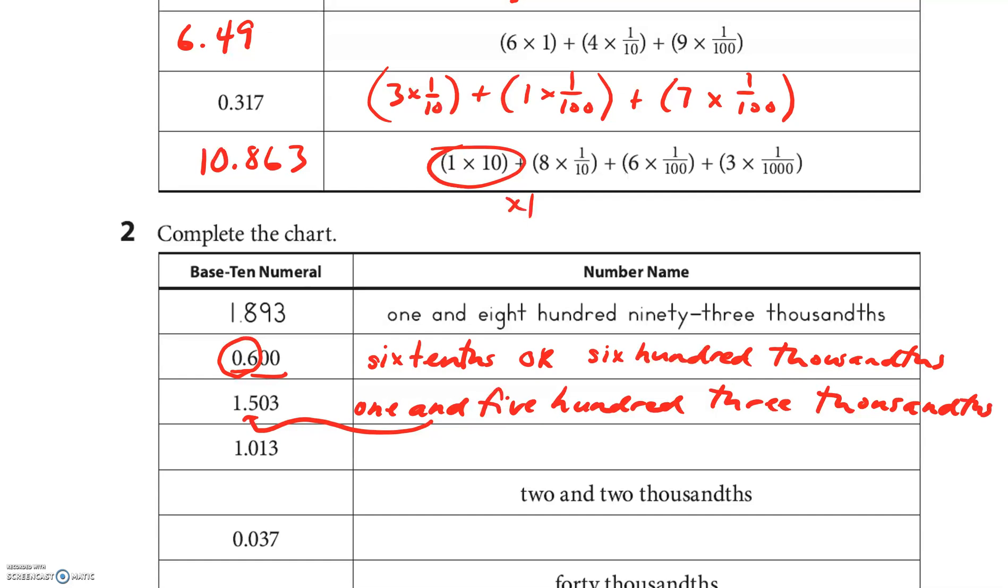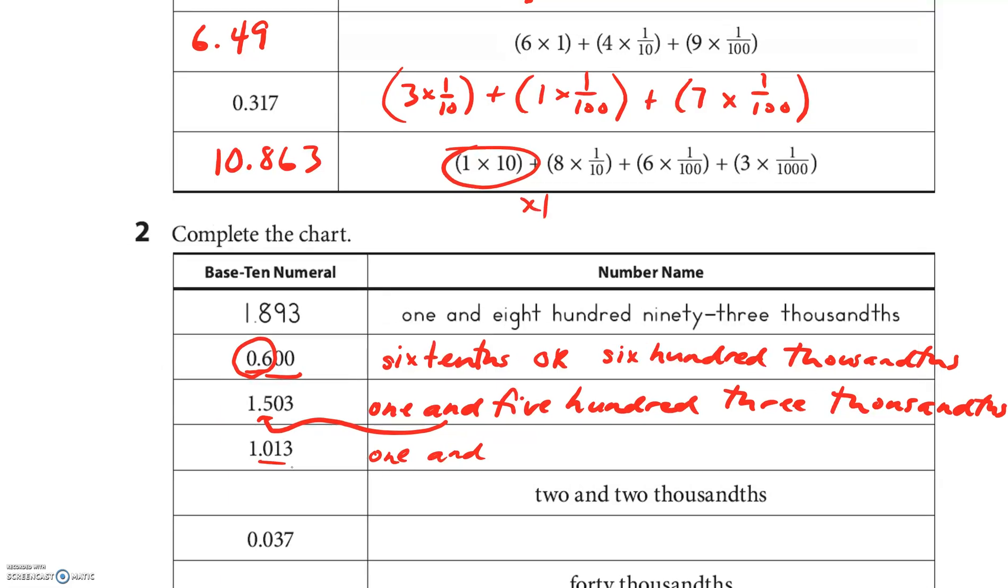1 and. The decimal is the and. It's the only time you say and. You don't, when you say a really long number, don't say any ands in it. So, 1 and 500. 3. And we're in the 1,000th again. 3 ends in the 1,000th.